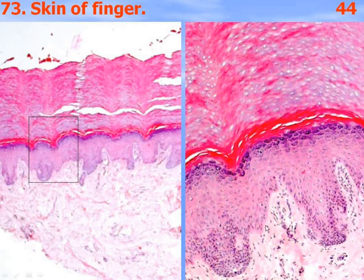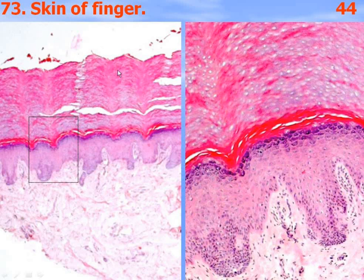First, the basal layer located at the basal membrane. Second, stratum spinosum. Third, stratum granulosum — contains in the cytoplasm small basophilic granules. Fourth, stratum lucidum — it's usually a bright pink layer with no cells visible. Fifth, stratum corneum, which consists of many layers of squamous cells.